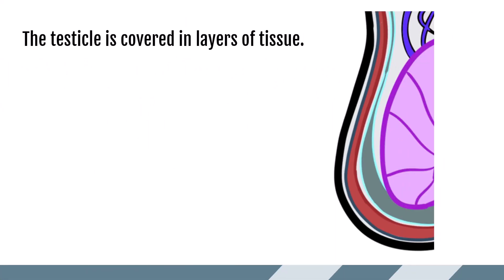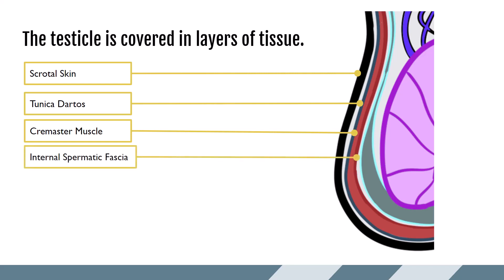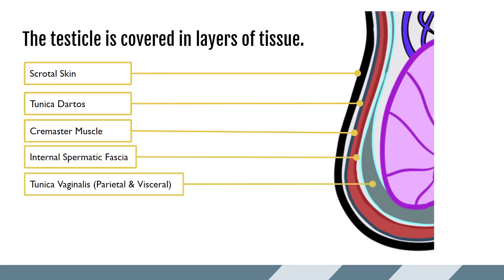The testicle is covered in layers of tissue, and from outer to inner we have: scrotal skin, the tunica dartos, the cremaster muscle, the internal spermatic fascia, the tunica vaginalis — both the parietal and visceral layers — and then finally the tunica albuginea.